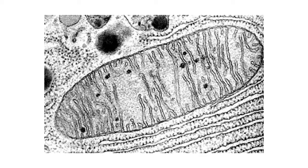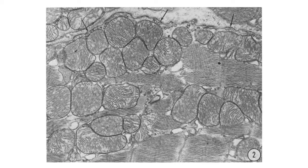Cellular respiration takes place in the mitochondria. A mitochondrion has a very characteristic appearance with a double membrane. The inner membrane has these long, finger-like projections into the interior of the mitochondrion. These are called cristae.